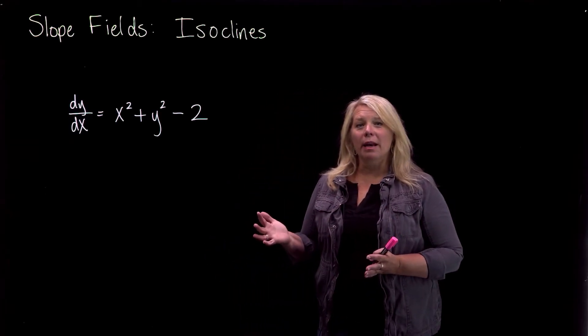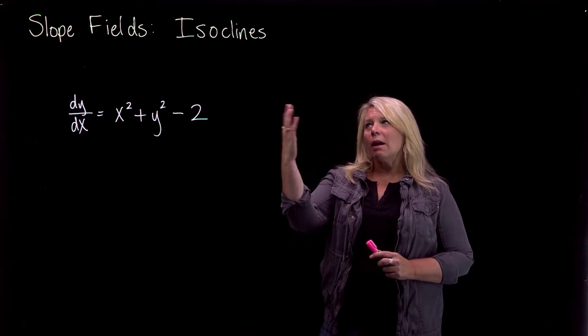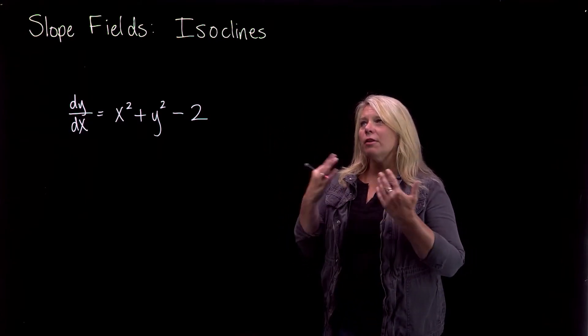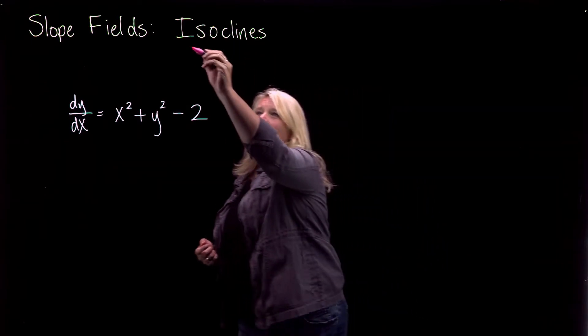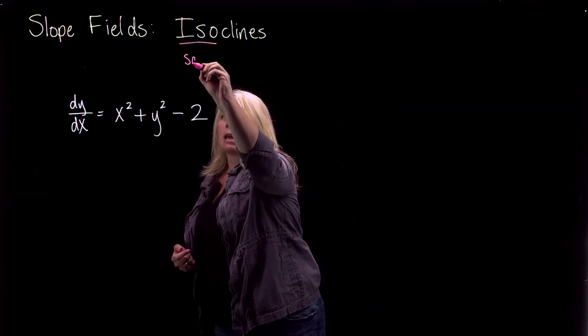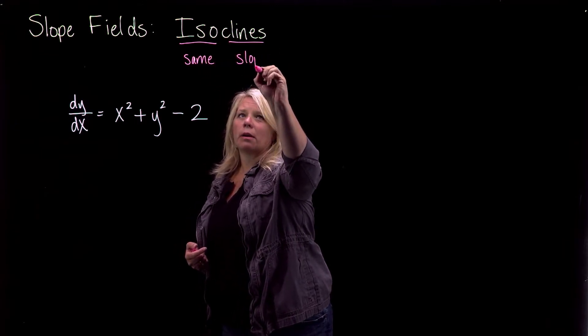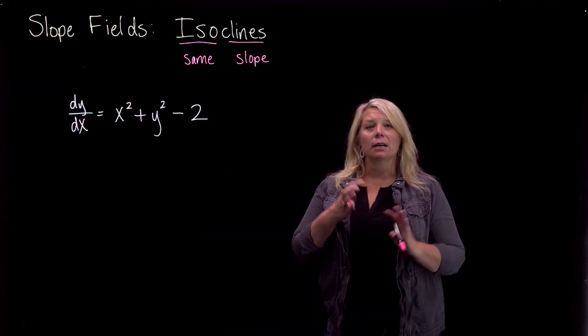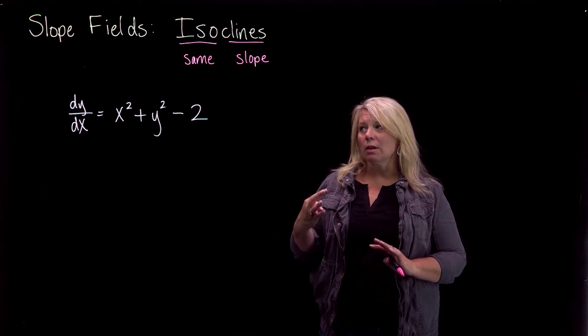All right, we're going to look a little bit at slope fields. So we've already talked about what slope fields are. What I want to emphasize in this video is isoclines. If you just kind of think about this word and the different pieces, iso means same and clines means slope. So what we're looking at here is the locations in our slope field where we're going to have the same slope, isoclines.